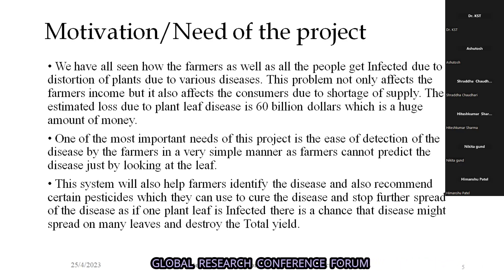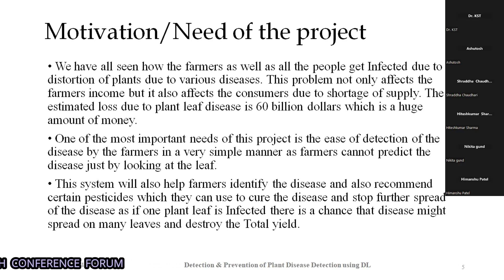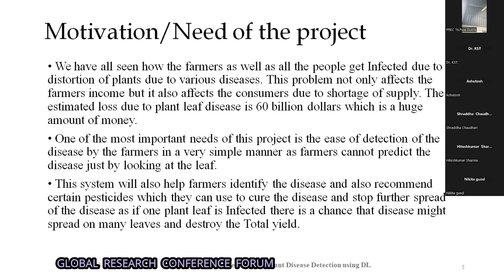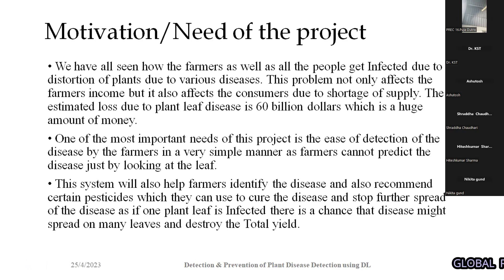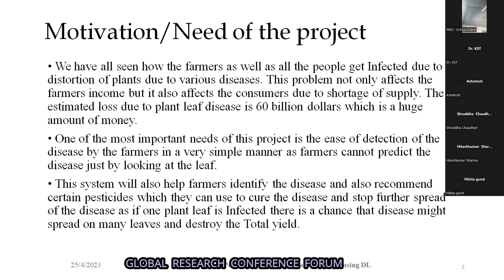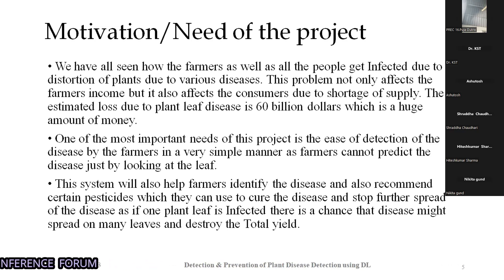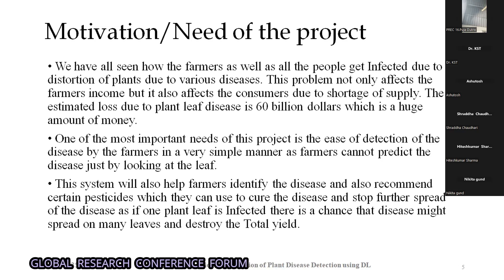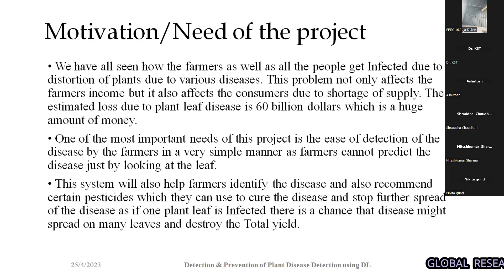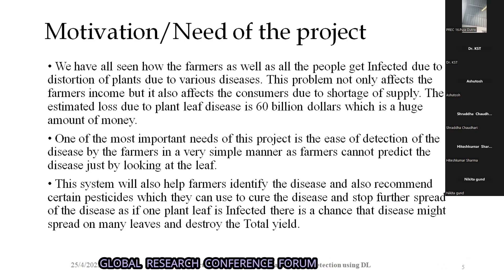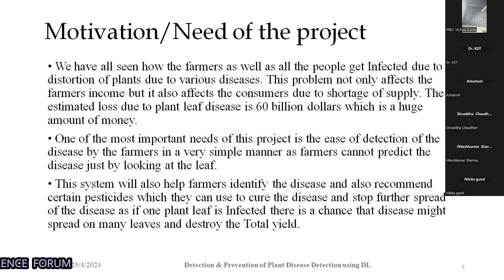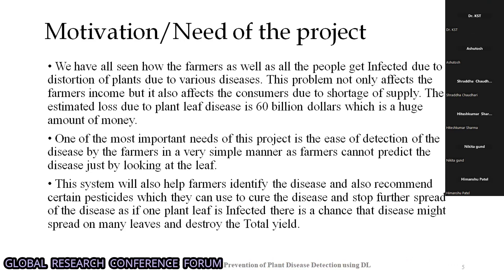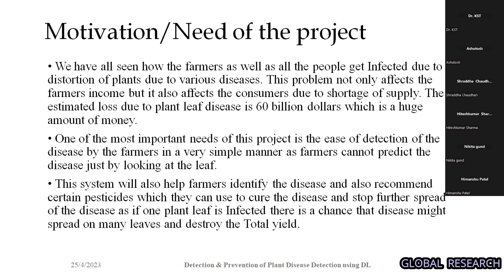Farmers bear a huge loss and no one helps them — that was the motivation of our project. The estimated loss is 60 billion dollars, which is a huge amount. We should ensure this number goes on decreasing. One of the most important needs of this project is ease of detection for farmers, since a farmer cannot predict disease just by looking at the leaf. We are providing a simple UI with a translation feature — a farmer can read content in Marathi, Hindi, or English.